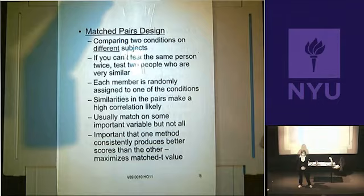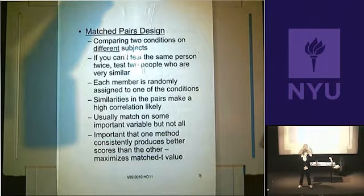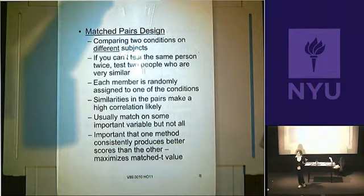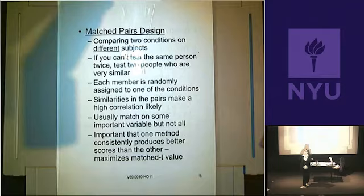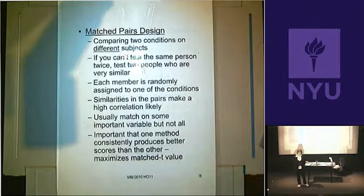Sometimes you cannot use the same people. For example, if I'm going to teach children to read using two different methods — whole word and phonics — I can't teach children with phonics and then teach them with whole words. But I still might want to use this kind of t-test and the relationship between the two sets of scores. In that case, I use different sets of kids who are matched in some way — matched, related, correlated, dependent. The classic case is twin studies, particularly identical twins, who are matched on so many variables including their DNA.